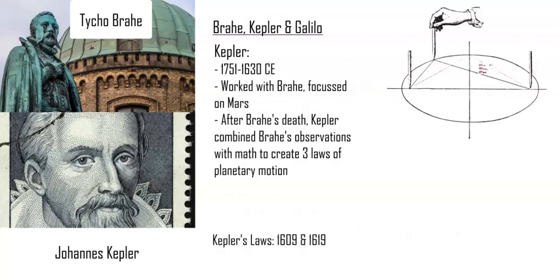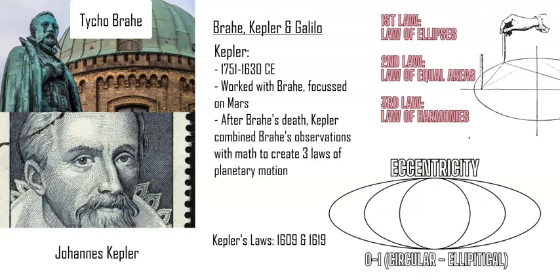The first and second laws came in 1609, and the third law in 1619. They basically explained how orbits are elliptical, not circular, and the law of equal areas describes the speed at which the planet moves — the perihelion being closest to the Sun. The third law was the law of harmonies, which basically states that all the planets' distances are linked to the speed of their orbit, which infers gravity before Newton's work.